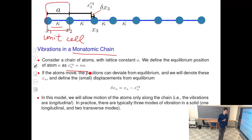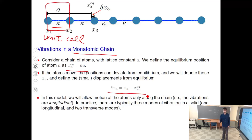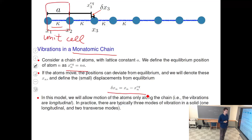The phenomenon we're going to look at with these springs is, of course, vibrations of this chain. We need to introduce deviations from equilibrium — displacements delta x — for each atom. For the nth atom, that's the difference between the actual instantaneous position and the equilibrium position. So we can just forget about the equilibrium positions and think about displacements of atoms from equilibrium.